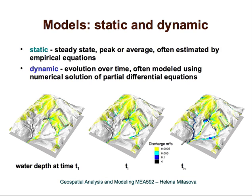Another aspect of modeling that has evolved rapidly is the development of dynamic models. Static models are relatively easy to compute and they represent steady-state, peak, or average fluxes or transport — often estimated by empirical equations and usually simple to compute within GIS. More complex dynamic models describe the evolution of the modeled quantity over time and are often solved using numerical solutions of partial differential equations.